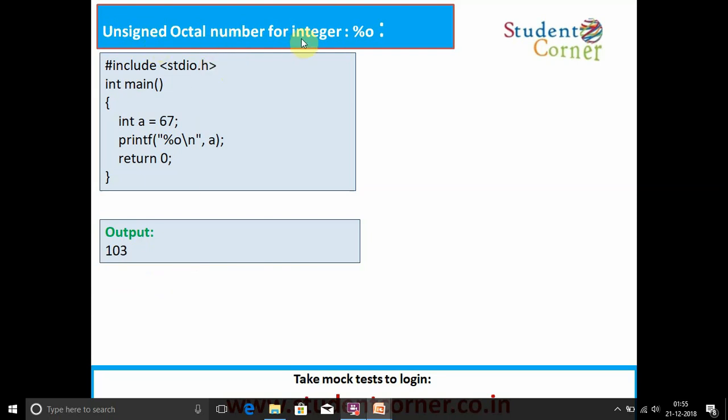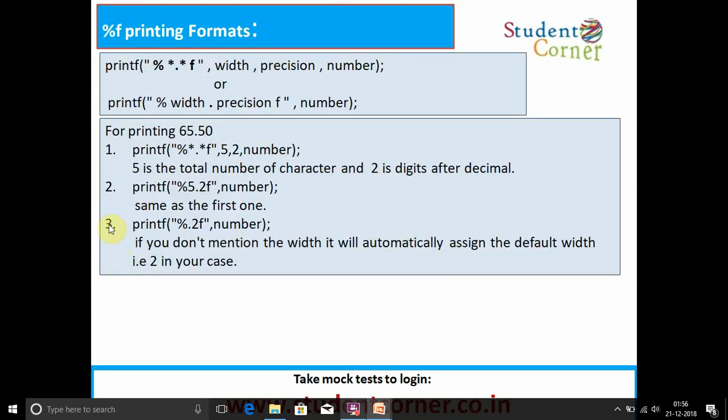Unsigned octal number for given integer. Take an integer 67, and we need to print octal number, it is 103. Hexadecimal also, 15 is 15 equaling to f.